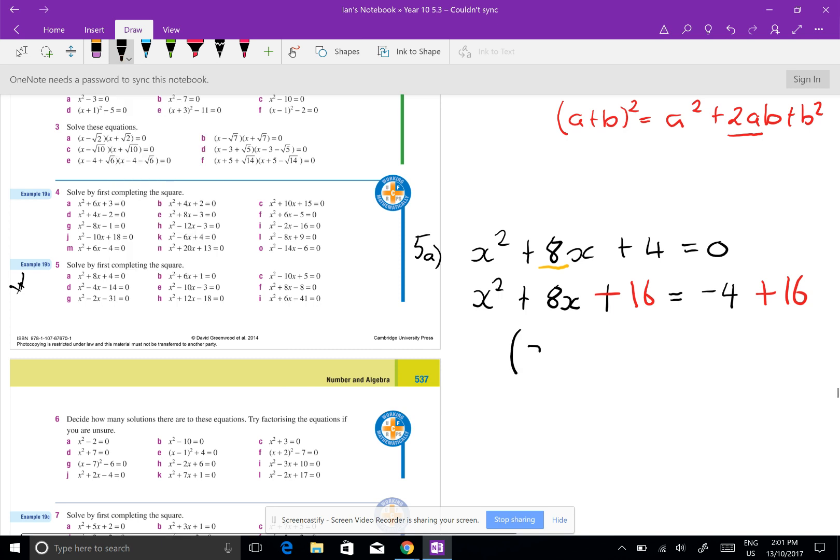So this becomes x, now you've got to remember it's a half of that 8, x plus 4 all squared. And minus 4 plus 16 is 12.